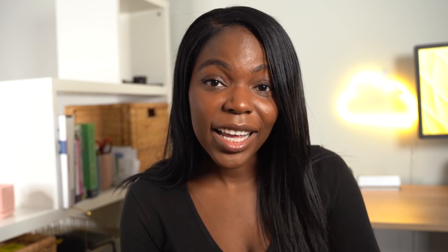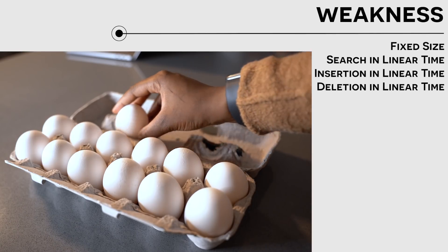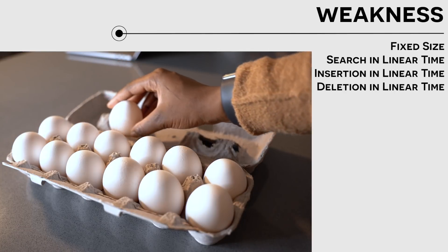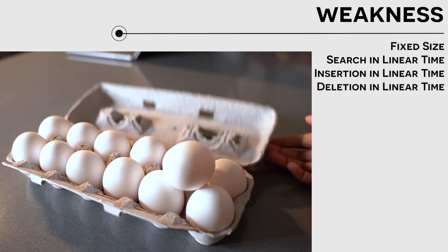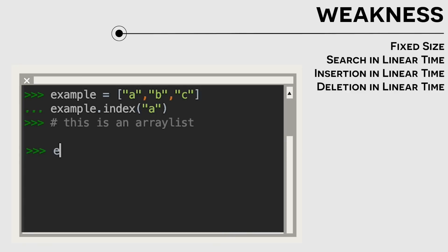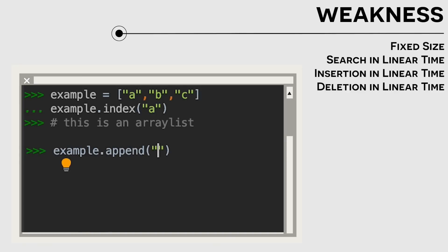But like egg cartons, arrays have some important limitations that you have to consider. The first limitation is the fact that arrays are a fixed size, just like egg cartons. If we wanted to add more eggs to an egg carton or we wanted to add more items to an array, we really can't adjust the size of the carton unless we have a dynamic array or an array list.